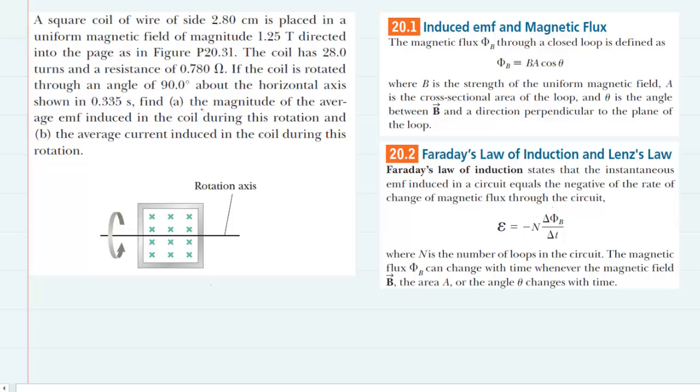In part A, we are asked to determine the magnitude of the average EMF induced in the coil while it is rotating through a magnetic field. We know from Faraday's law of induction that the induced EMF is equal to the number of turns in the coil, which in this case is 28, multiplied by the change in magnetic flux divided by the change in time.